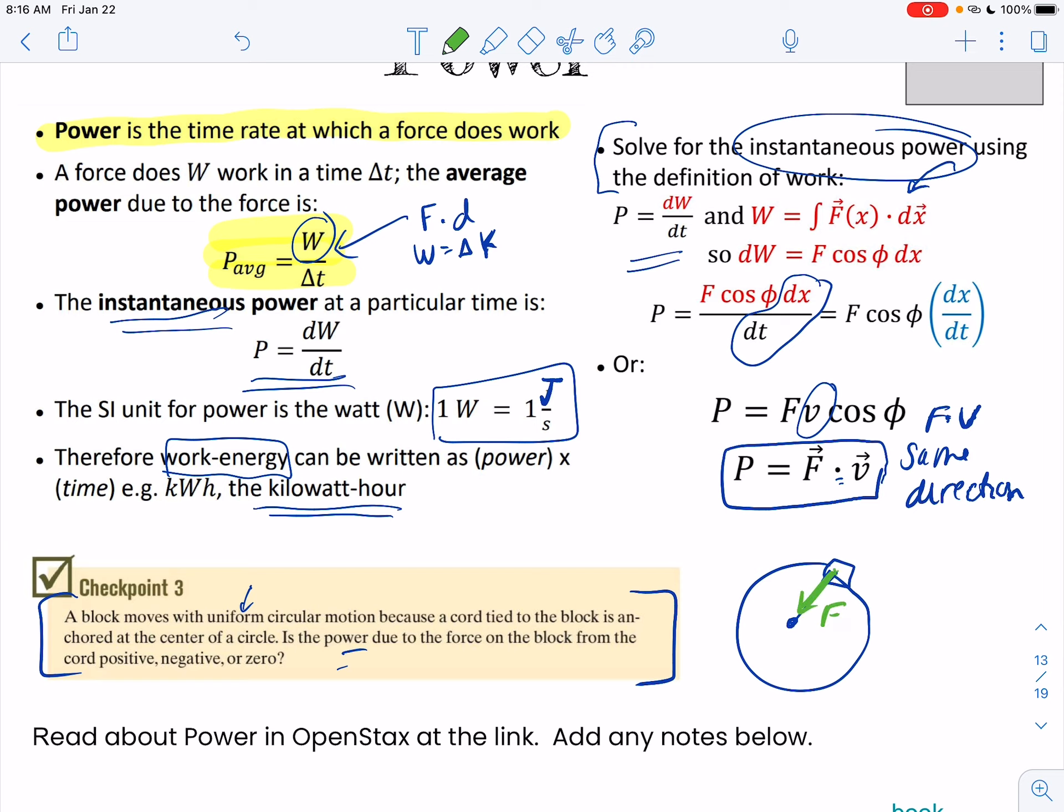if that force is inward and that velocity or the displacement term is going to be tangent, those are not the same direction. So that means the work done is zero, therefore the power is zero. So remember, anytime those are perpendicular, it's going to zero out.